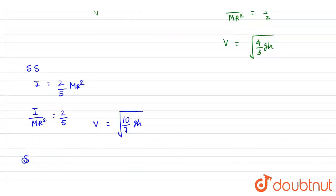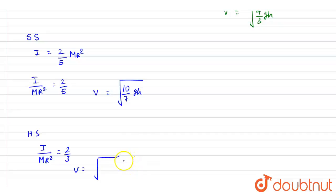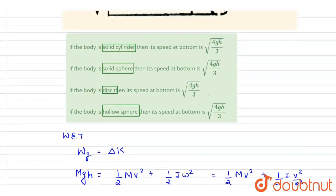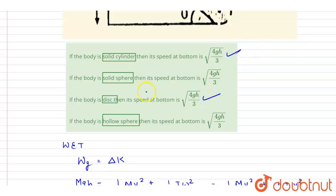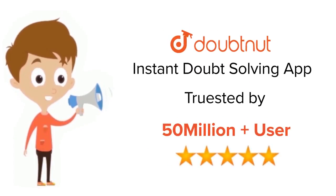For a hollow sphere, I by mr squared is 2 by 3. The denominator becomes 1 plus 2 by 3, which is 5 by 3. So velocity equals the square root of 2gh divided by 5 by 3, giving the square root of 6gh by 5. Checking the options, the correct answers are for the solid cylinder and disk — options A and C are correct.